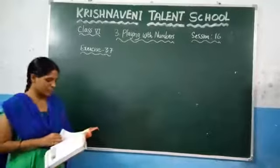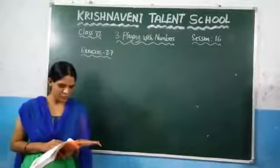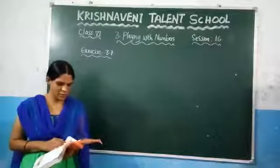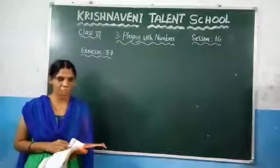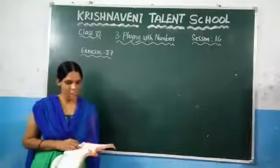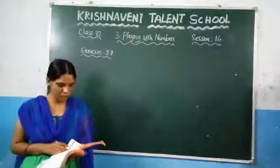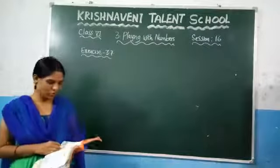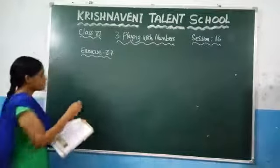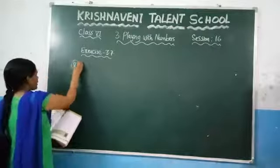In the last session, we discussed access to 3.7, questions 1 up to 7. Now see the 8th question. There are only 2 questions left in this chapter, and we are going to solve those 2 questions here. What is the 8th question given here?